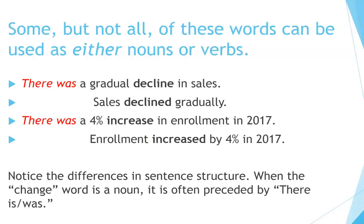Some, but not all, of these words can be used as either nouns or verbs. For example: 'There was a gradual decline in sales.' Or: 'Sales declined gradually.' 'There was a 4% increase in enrollment in 2017.' Or: 'Enrollment increased by 4% in 2017.' Notice the differences in sentence structure. When the change word is a noun, it is often preceded by 'there is' or 'there was.'